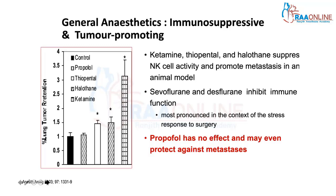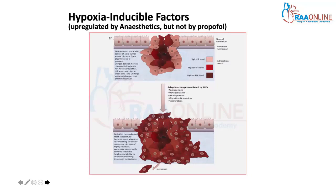When there is a tumor, it consists of rapidly dividing cells that depend on the host's native vascularization for supply of nutrients. At the core, these rapidly dividing cells are furthest away from nutrition and therefore are hypoxic, because they receive less oxygen from the blood vessels.